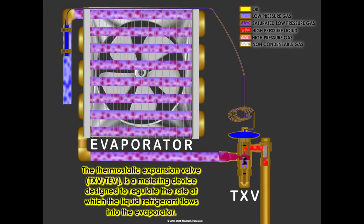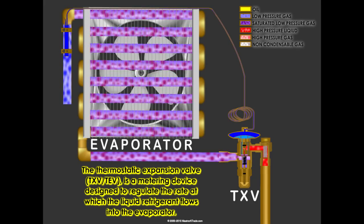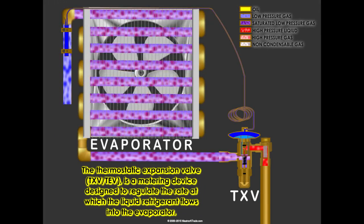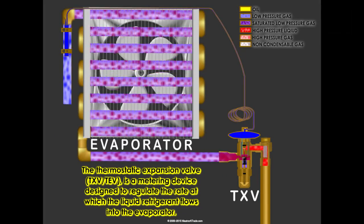The thermostatic expansion valve, TXV or TEV, is a metering device designed to regulate the rate at which liquid refrigerant flows into the evaporator.